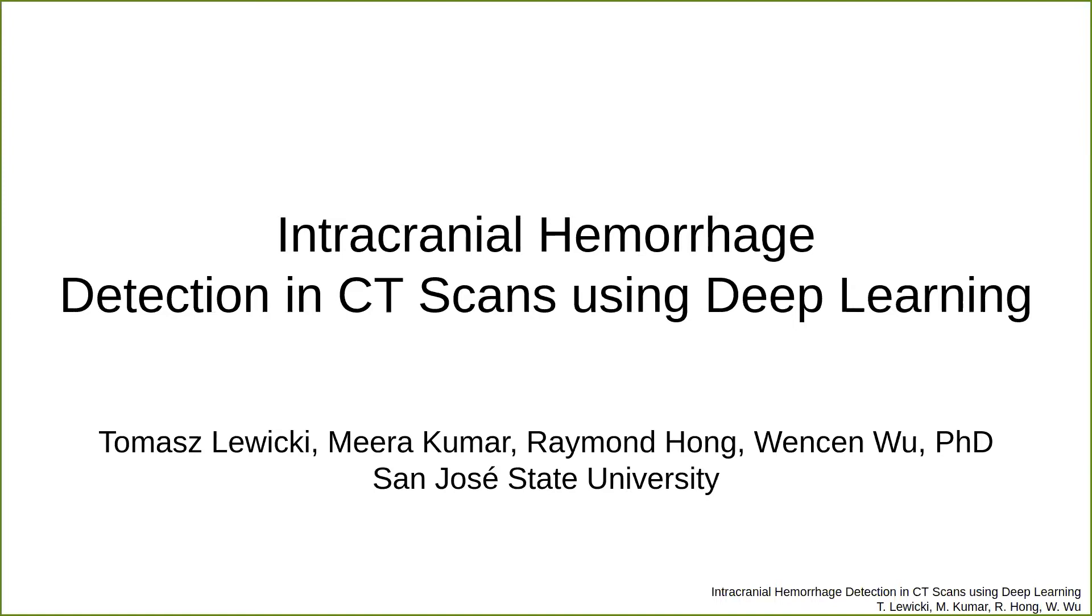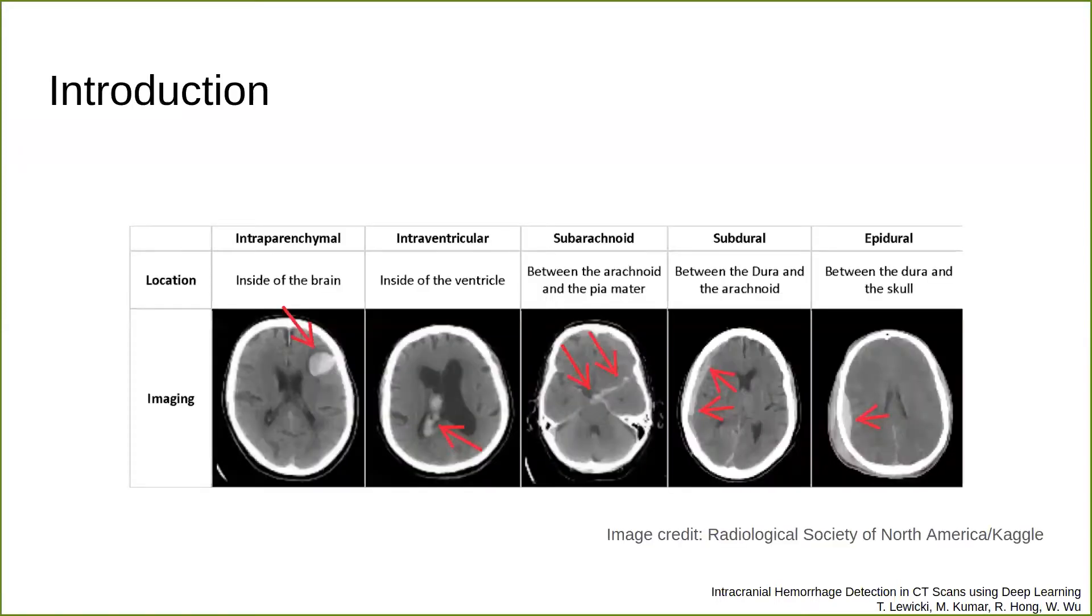An intro to our problem. An intracranial hemorrhage is when a blood vessel ruptures within the skull and leaks. ICHs can affect various patients. Some causes include trauma, stroke, high blood pressure, and drug use. Different types of ICH can be identified by their distinct shape, location, and size.